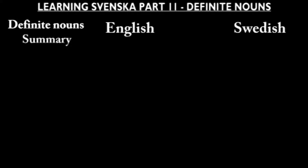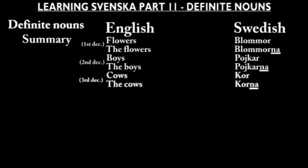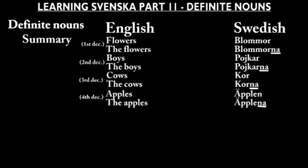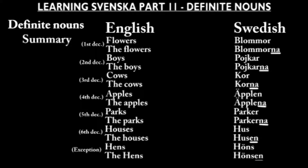All right, the plural forms. Blommor: blommorna. Pojkar: pojkarna. Kor: korna. Äpplen: äpplena. Parker: parkerna. Hus: husen. Höns: hönsena.